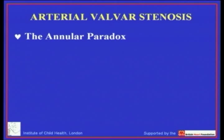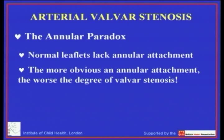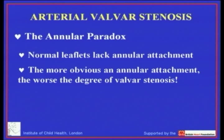This is what I like to identify as the annular paradox. We all describe arterial valves as having annuluses, but what we've shown is that the normal aortic valve totally lacks any annular attachment, and that the more obvious the annular attachment becomes, the worse is the degree of valve stenosis. The other consequence of annular attachment of rudimentary leaflets is the so-called absent pulmonary valve syndrome. This reinforces my belief that we should be describing the arterial valves without recourse to a non-existent valve annulus.